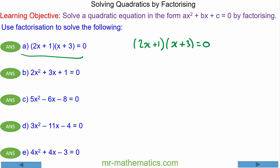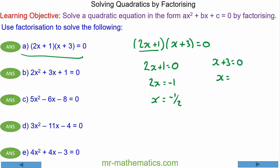The solutions for x to make this equation equal 0 are when each bracket equals 0. So 2x plus 1 equals 0, meaning 2x equals negative 1, and x equals negative one half. And when the other bracket equals 0, x plus 3 equals 0, so x equals negative 3.